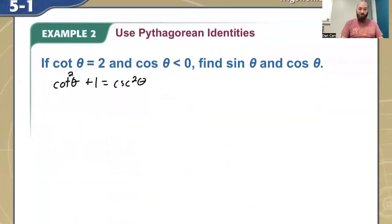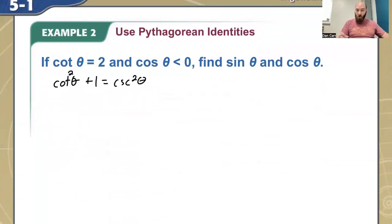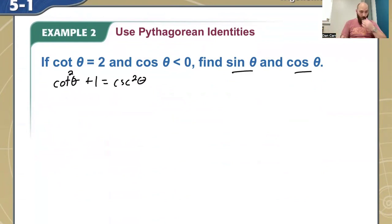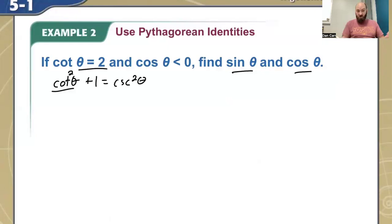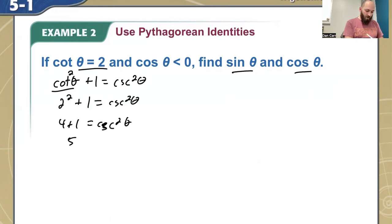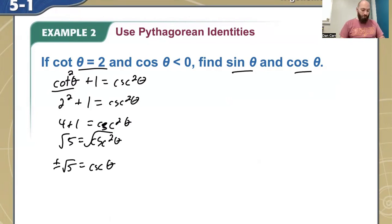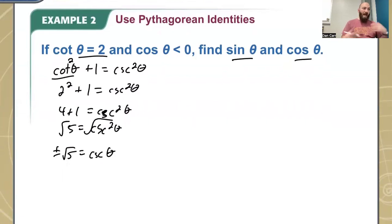So how can we use that? Our first case: cotangent of theta equals 2 and cosine of theta is less than 0 — find sine of theta and cosine of theta. Since I'm dealing with cotangent, I'll look at my identity: cotangent squared theta plus 1 equals cosecant squared theta. If cotangent of theta is 2, that's 2 squared plus 1 equals cosecant squared, so 4 plus 1 equals cosecant squared, meaning 5 equals cosecant squared. Taking the square root of both sides gives plus or minus square root of 5 equals cosecant of theta.